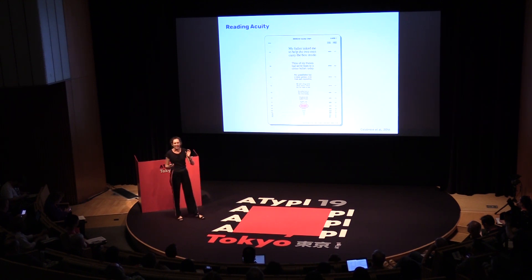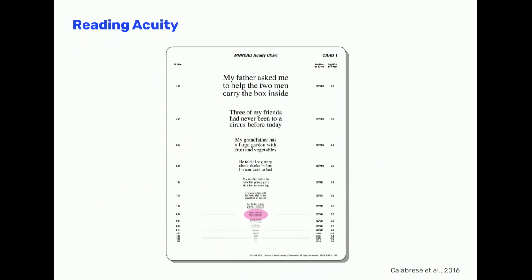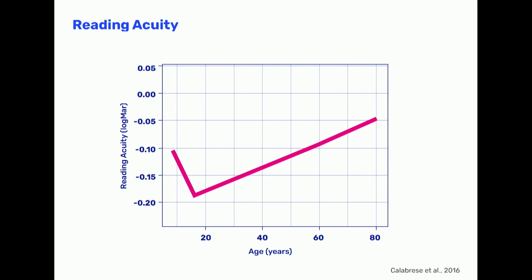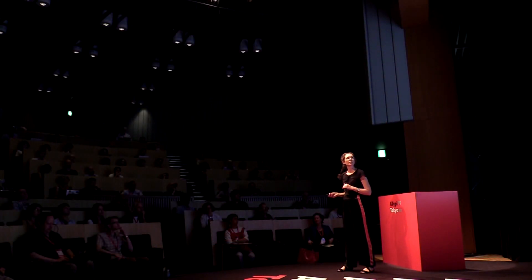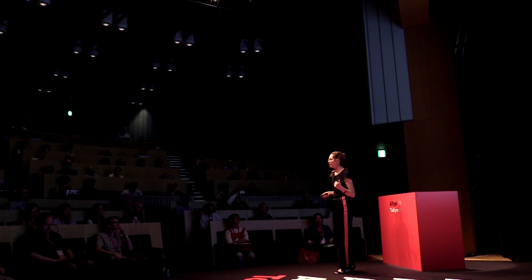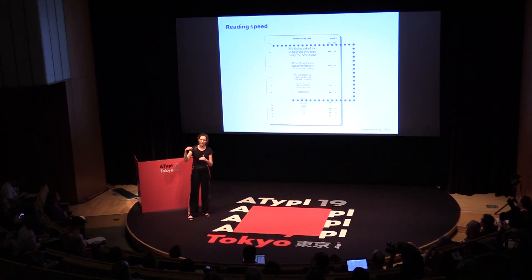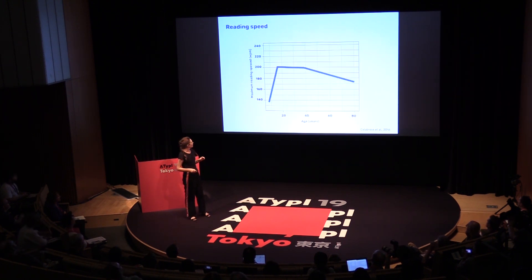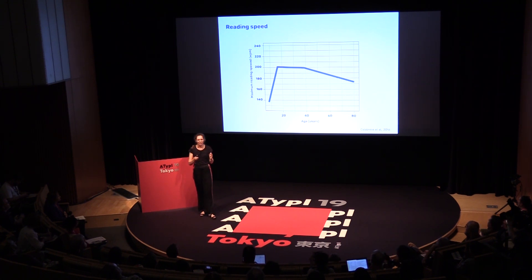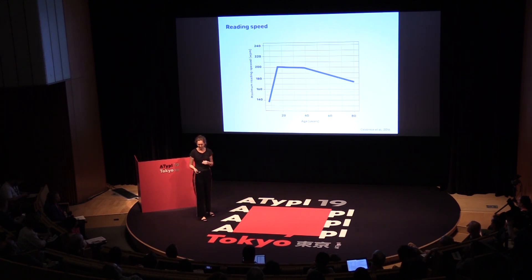Reading acuity is the smallest possible size that you can almost read the text. They found that by the age of 16 you can read the smallest possible size, and from there on the smallest size that you can read just gets bigger and bigger. Reading speed is basically an average of all the paragraphs that you can read at a regular reading pace. They found a maximum at age 16, then it evens out until around 40, where it gradually goes down.